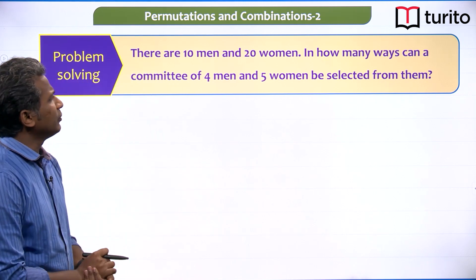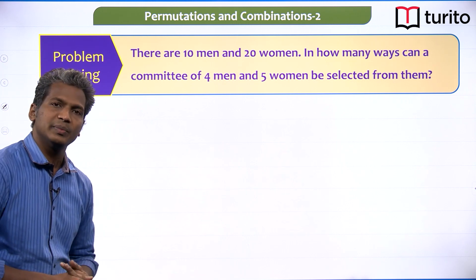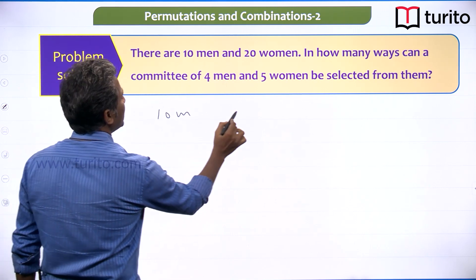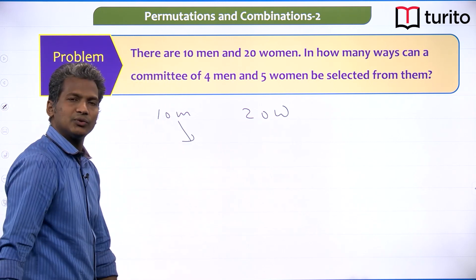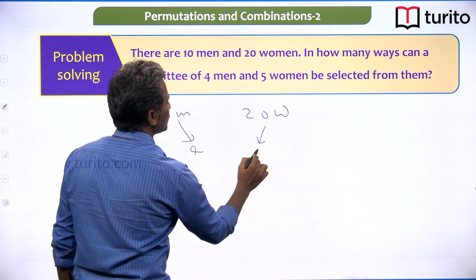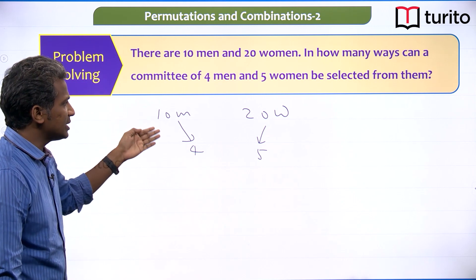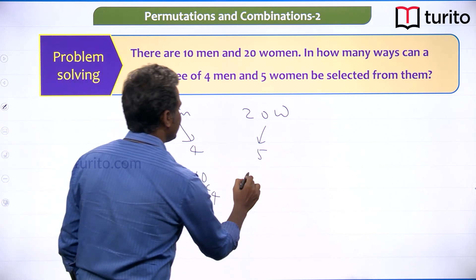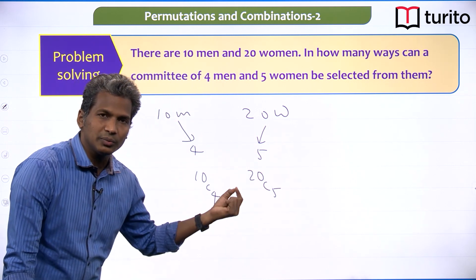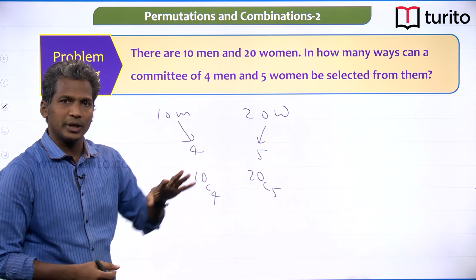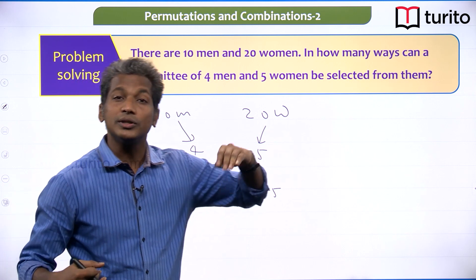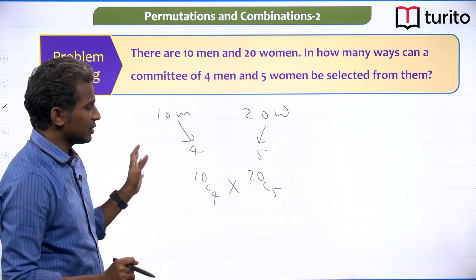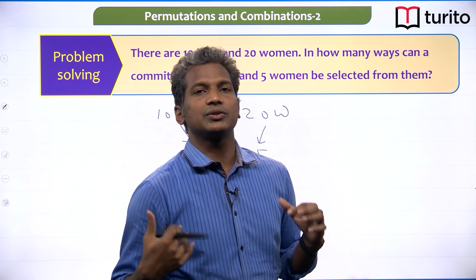Next example: there are 10 men and 20 women. In how many ways can a committee of 4 men and 5 women be selected? From 10 men, we select any 4 in 10C4 ways; from 20 women, we select any 5 in 20C5 ways. Since we have to select 4 men AND 5 women, the relation is AND, so we multiply them. This illustrates the fundamental theorem of counting.